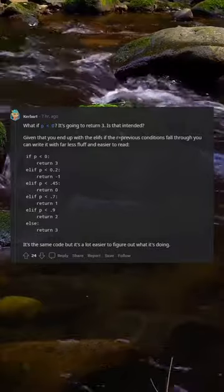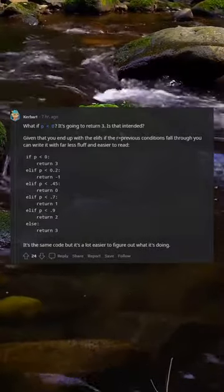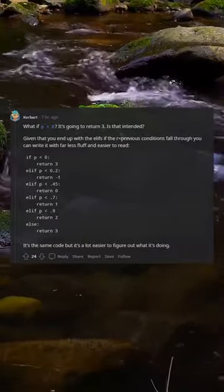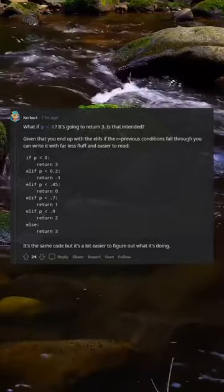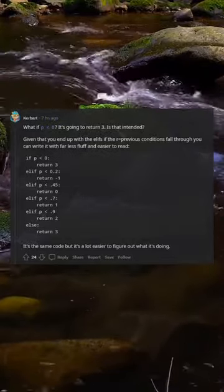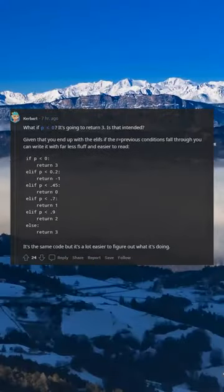You can write it with far less fluff and easier to read. if p0 return 3 al if p 0.2 return 1 al if p.45 return 0 al if p.7 return 1 al if p.9 return 2 else return 3.